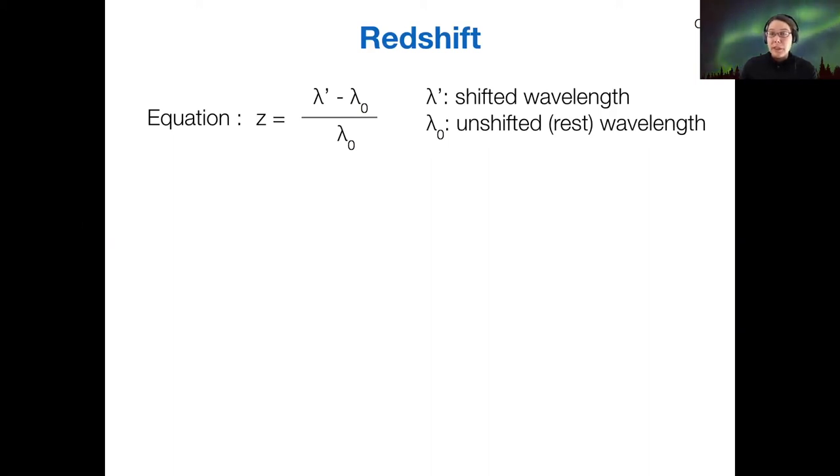This is what we've used in the Doppler shift equation. Redshift in general we denote with the letter z, and it's just the difference in wavelengths between some unshifted rest wavelength lambda naught and a shifted wavelength which we call lambda prime, divided by the unshifted wavelength.